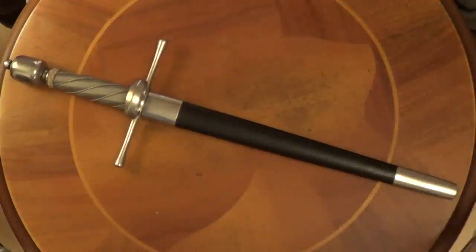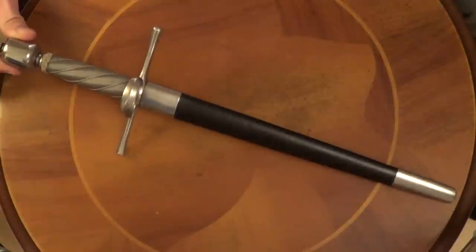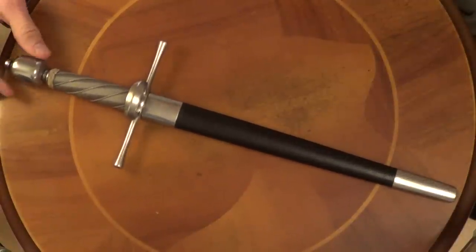Hey folks, Matt Easton here filming a review for Scholar Gladiatoria channel. So what you see in front of you, you will have seen in a few of my videos if you watch lots of them. And it is a 16th century style Mangosche or left hand dagger. This particular example made by Hanway.